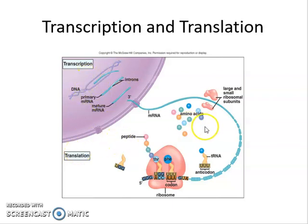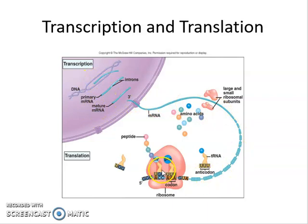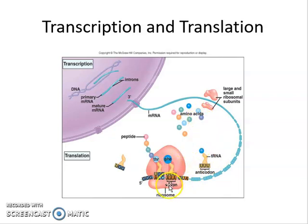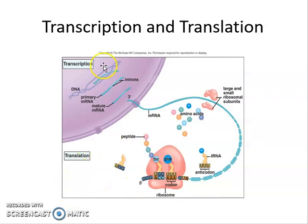From this picture you need to understand what's happening and be able to label the different parts: know that's DNA, know it's RNA being made and RNA that's leaving, know RNA has three-base sequences called codons, know this is transfer RNA and its job is to bring amino acids to the ribosome and read the codon from messenger RNA with its anticodon. Know that translation is the second step occurring in the cytoplasm, and transcription is the first step occurring in the nucleus.